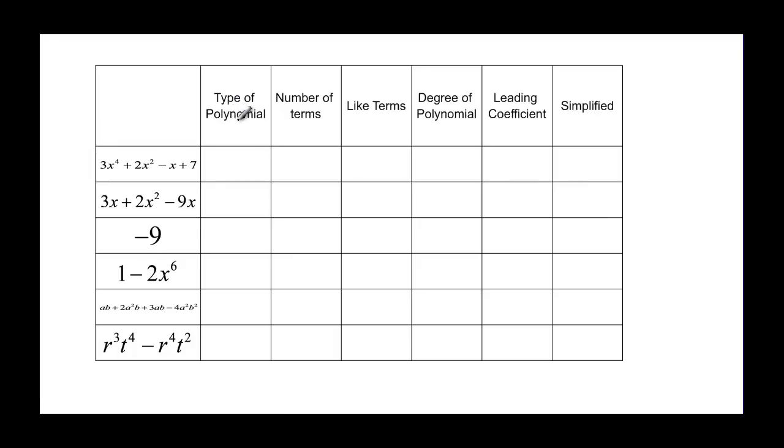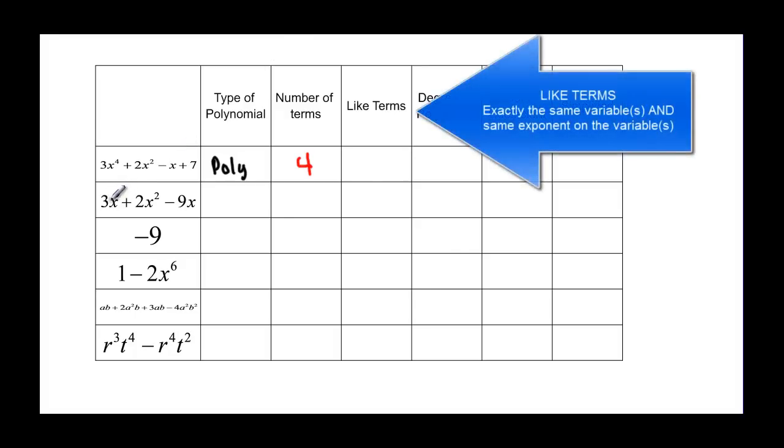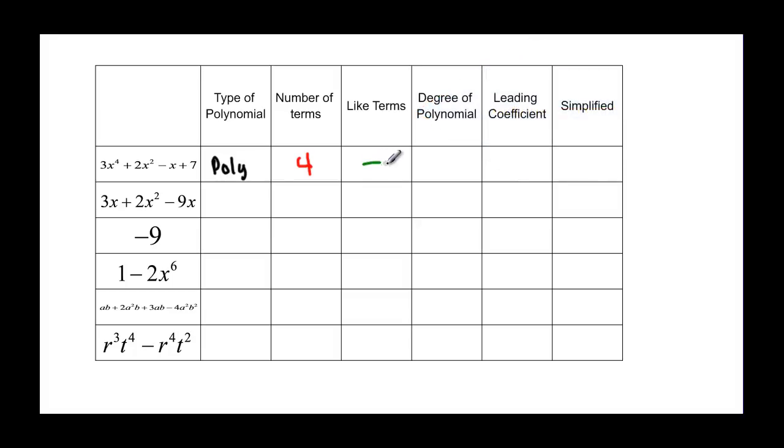We want to know the type of polynomial. It depends on how many terms we have. This particular one has four terms, so I'm going to put that in my number of terms column. If it's anything greater than three, we just call it a polynomial. Now we want to talk about like terms. In like terms, we have to have exactly the same variable and exponent on the variable. I have three terms here that have x's in them, but none of them have the same exponent, so I don't have any like terms in this particular polynomial.